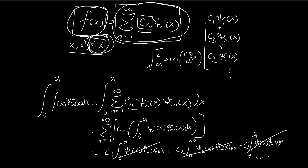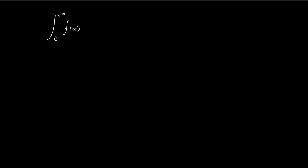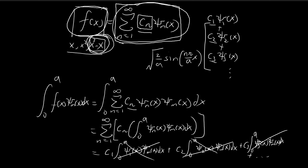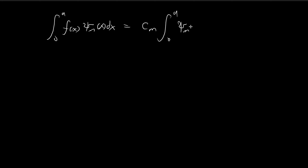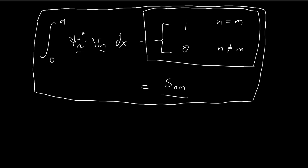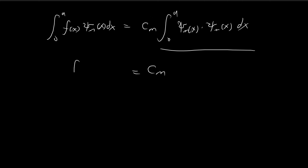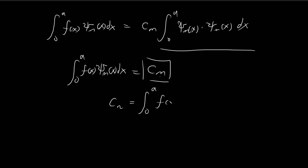If you check the entire infinite series, you see that only one term remains — the mth term. So on the left-hand side we have the integral from 0 to a of f(x)·ξm(x) dx, and on the right-hand side only cm times the integral of ξm(x)·ξm(x) dx survives. From the previous video, that integral equals 1, so cm equals that integral. We have found a formula for cm, and since m is just a dummy variable we can rename it n, giving us the formula for cn.